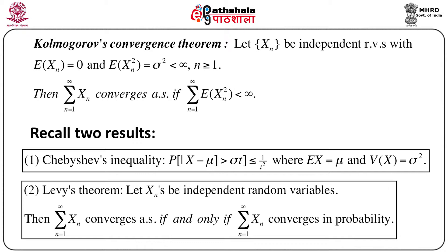Before proving Kolmogorov's convergence theorem, we first recall two results which are extremely important. One is the famous Chebyshev's inequality: the probability that the modulus of x minus mu is greater than sigma t is less than or equal to 1 over t squared, where the expectation of x is mu and the variance of x is sigma squared. The other is Levy's theorem, which states that for a sequence of independent random variables x_n, the summation x_n converges almost surely if and only if it converges in probability. We will use these two results to prove Kolmogorov's convergence theorem.